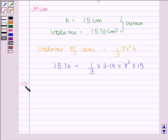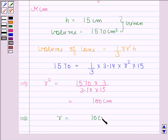Now, this implies r² = (1570 × 3)/(3.14 × 15), and this is equal to 100 cm². And this implies r is equal to 10 cm.